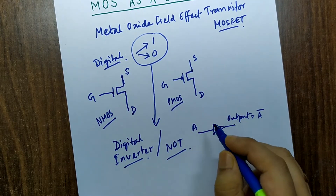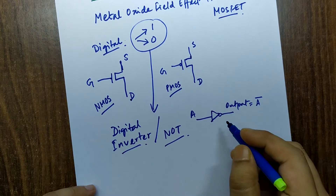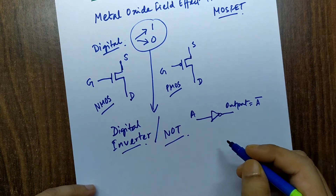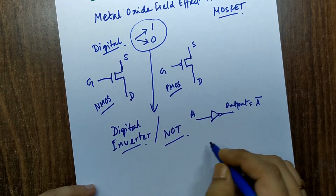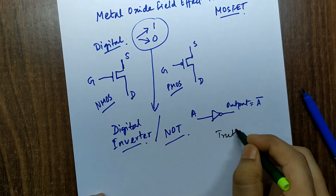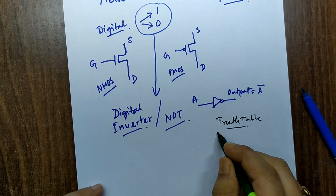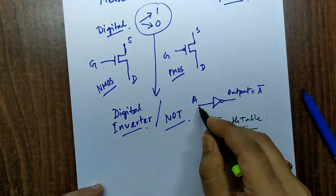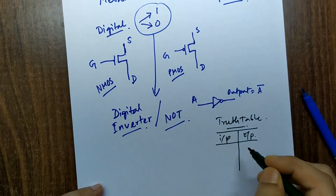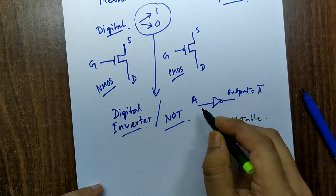To understand its operation, we need to look at the truth table. I have video lectures on digital electronics where the truth table construction is covered in detail. The NOT gate truth table is very simple — it has one input column and one output column, since there is only one input in a NOT gate.